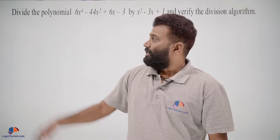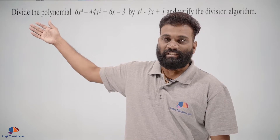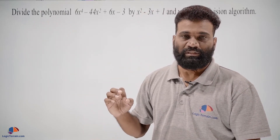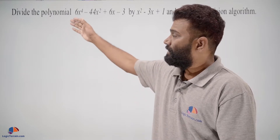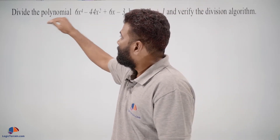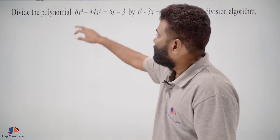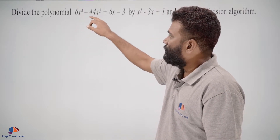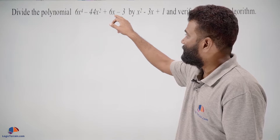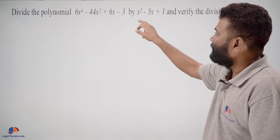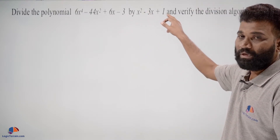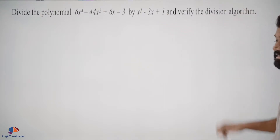Hello students. In this question, which is a 4-mark question and one of the very important previous board questions: divide the polynomial 6x to the power of 4 minus 44x square plus 6x minus 3 by x square minus 3x plus 1, and verify the division algorithm.